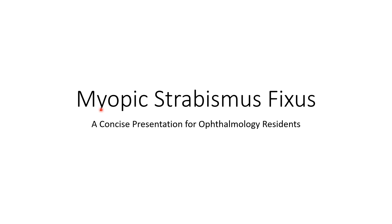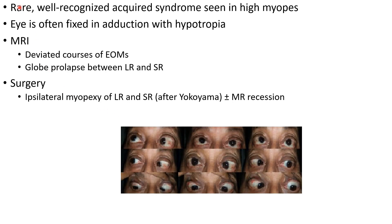Hello guys, this is Indian Medico, and in this video we are going to discuss myopic strabismus fixus. Myopic strabismus fixus is a rare, well-recognized acquired syndrome seen in high myopes. In this condition, the eye is often fixed in adduction with hypotropia, as you can see in the primary gaze in this nine-gaze photograph.